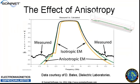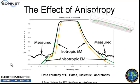So what are the effects of anisotropy? What happens if we don't include it in our designs? In yellow we see isotropic EM simulation of an actual filter design — I want to thank David Bates, Dialogic Laboratories, for this data. The yellow is isotropic simulation, the green is anisotropic simulation, and the black is measured. You can see that simulation has considerably better alignment when we use anisotropic dielectric constants.